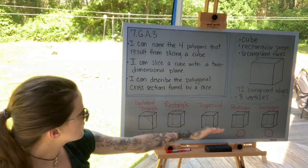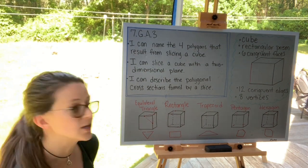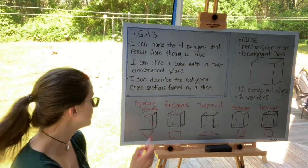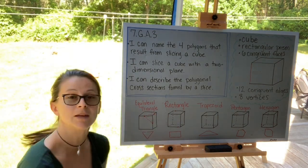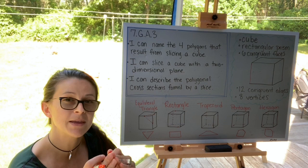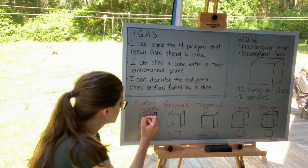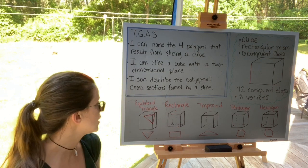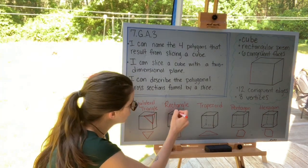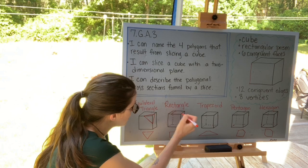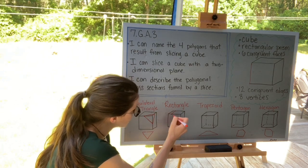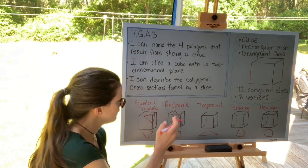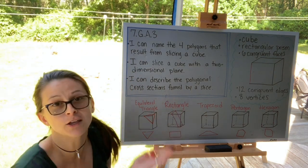Here are some examples of slices that you can draw. You can get an equilateral triangle by connecting three midpoints of edges that meet at the same vertex. You can make a rectangle by slicing through four faces and having the slice meet the base at an angle. If you meet the base perpendicularly, you'd form a square.